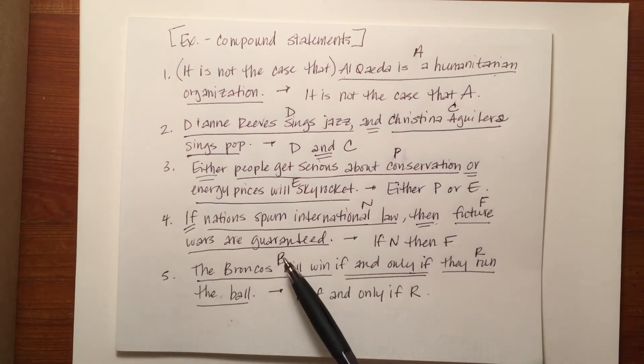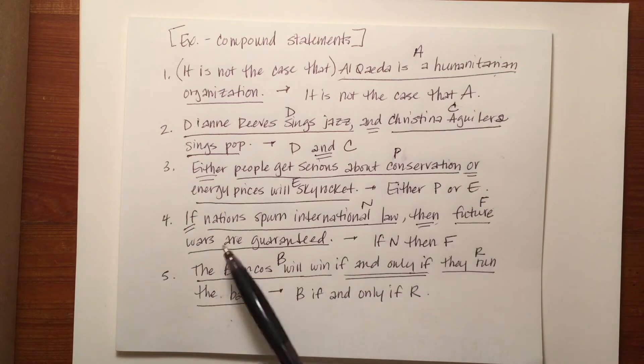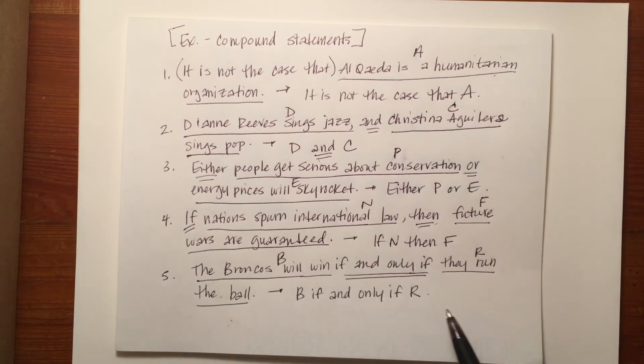In number four, 'if nations spurned international law, then future wars are guaranteed' became 'if N then F.' And in number five, 'the Broncos will win if and only if they run the ball' became 'B if and only if R.'